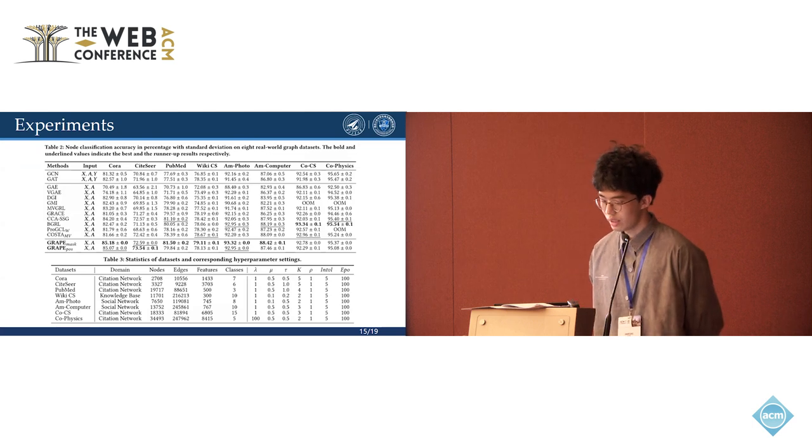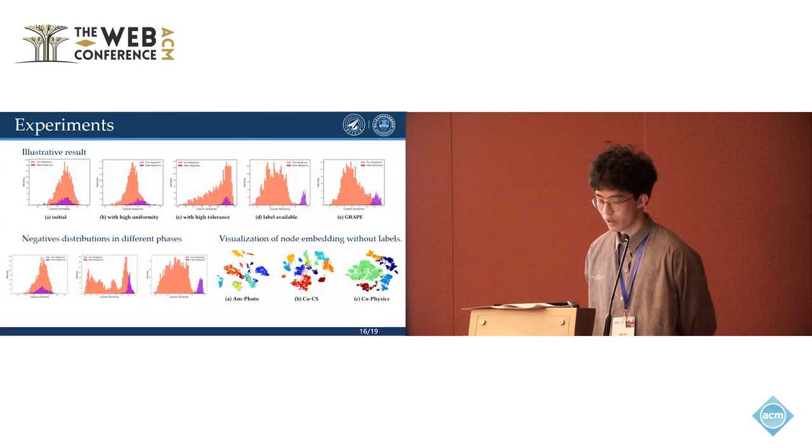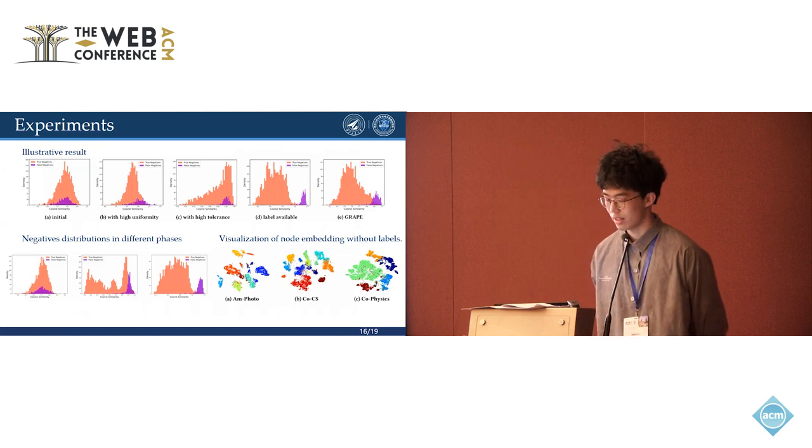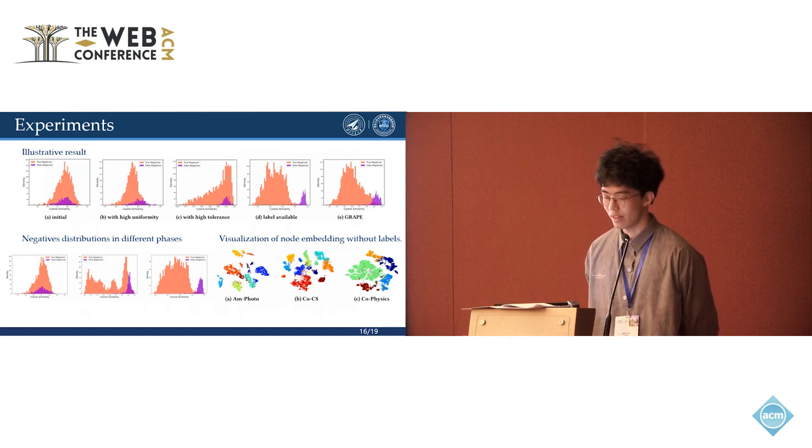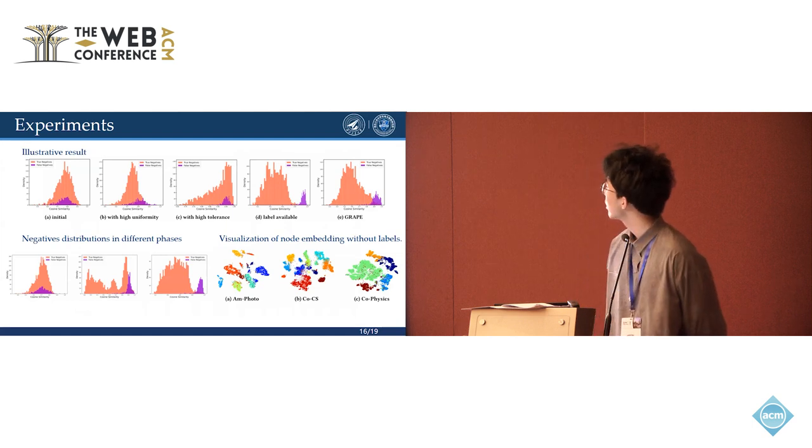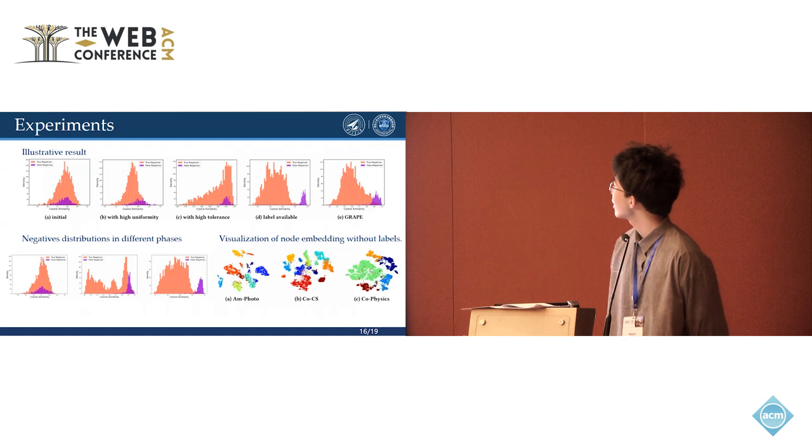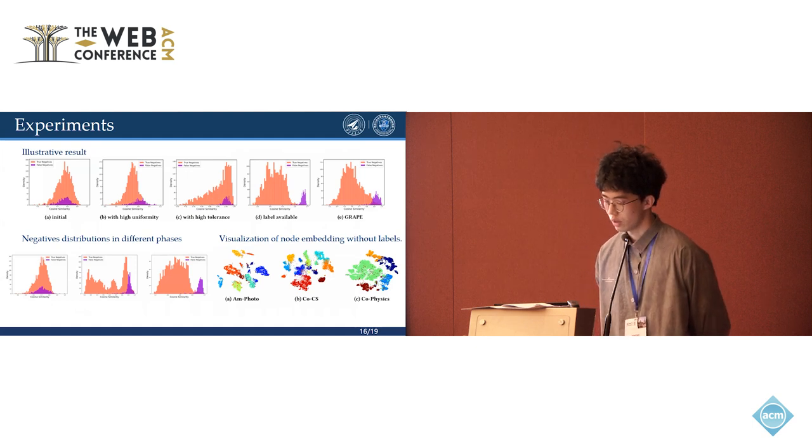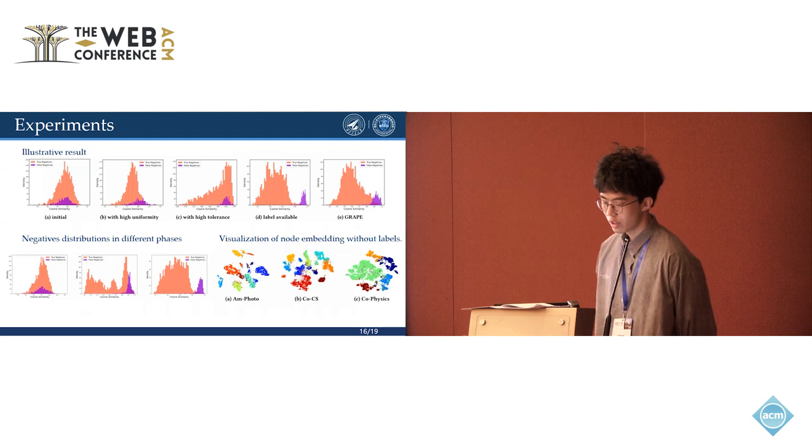Besides, we conduct comprehensive experiments and visualizations to thoroughly analyze the results and the behaviors of GRIP. For example, in our toy experiments, we only select one class in the core data sites, and the illustration results show GRIP can achieve a great separation of positives and negatives.